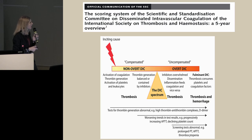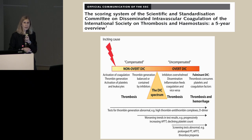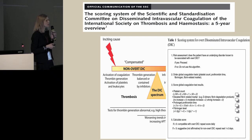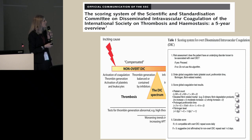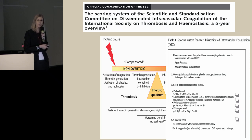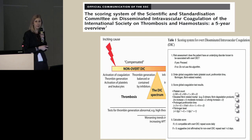Overt DIC means we already have clinical manifestations of bleeding or thrombosis, or both in the same patient, along with modification of standard coagulation tests and thrombocytopenia. To diagnose this, we have scoring systems from the ISTH. The scoring system for overt DIC begins with an important question: does the patient have an underlying disorder known to be associated with DIC? If no, the scoring system is not recommended, as we might get a false DIC diagnosis.